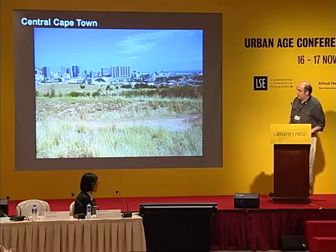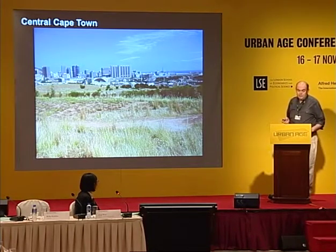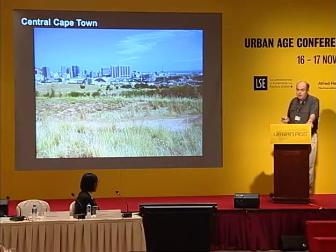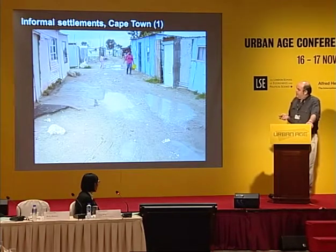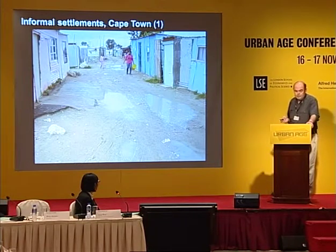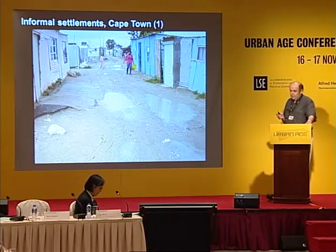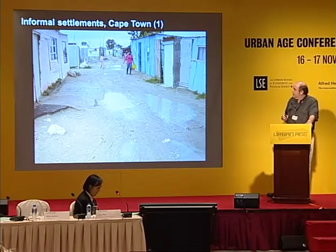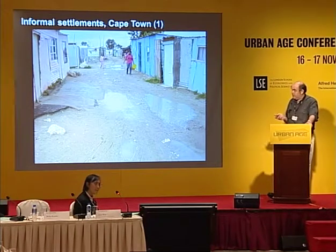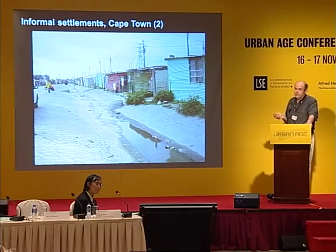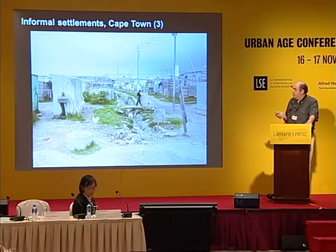This is the center of Cape Town. This empty piece of land in the foreground used to be the densest, most vibrant part of Cape Town — it was demolished and the residents were forcibly relocated in the 60s and 70s. This is a typical informal settlement in Cape Town. The informal settlements are the densest parts of the city, mainly populated by migrants from rural areas who have been living in Cape Town for many decades. There are some basic services, but never enough and they never work well enough.